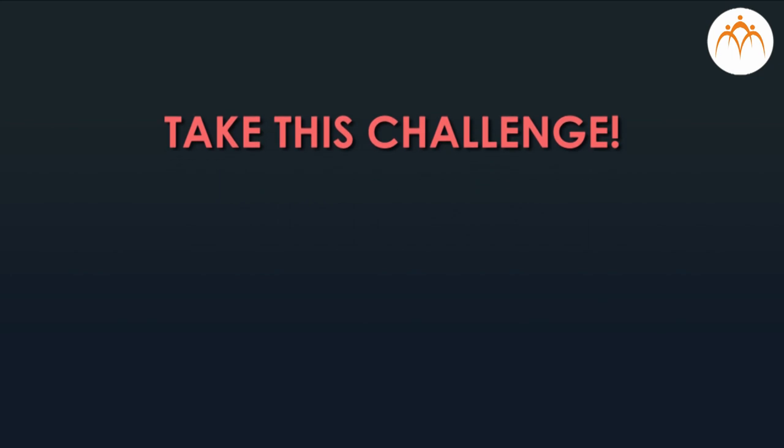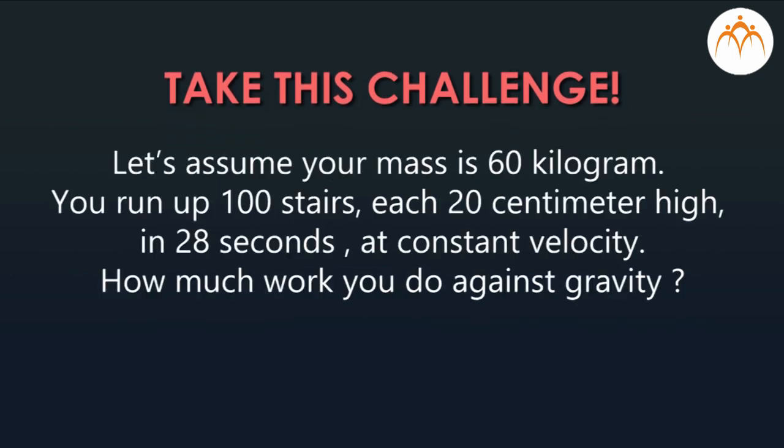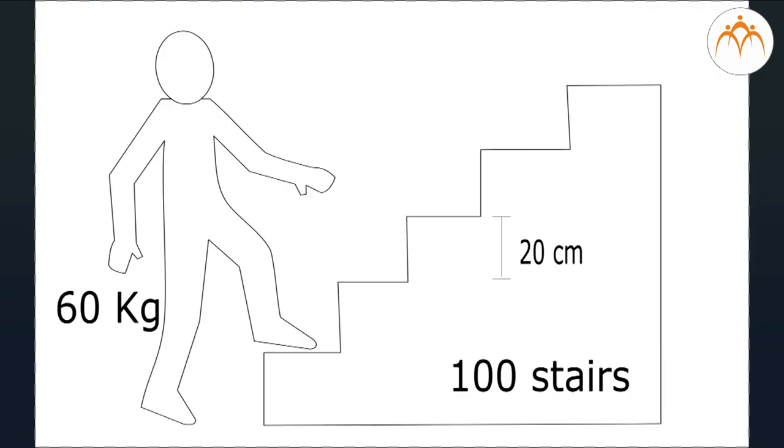Remember that power is the rate at which someone or something does work. Challenge: assume your mass is 60 kilograms. You run up 100 stairs, each 20 centimeters high, in 28 seconds at a constant velocity. How much work do you do against gravity? We discussed free fall and explored the definition of power with simple examples — it is the rate at which work is being done. Do try similar activities to know more about power.